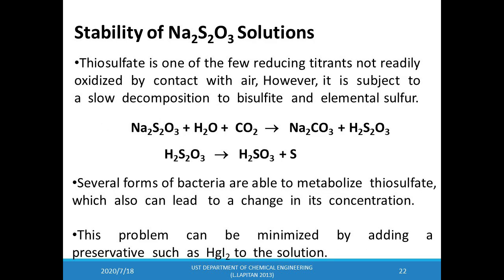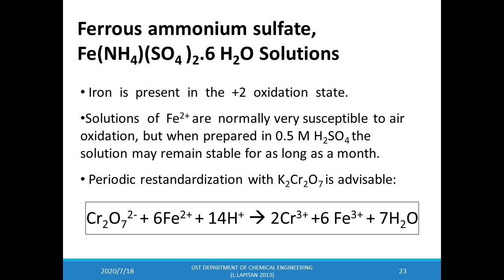Although thiosulfate is one of the few reducing titrants not readily oxidized by air, it is subject to slow decomposition to bisulfite and elemental sulfur. If used over several weeks, a solution of thiosulfate needs to be re-standardized. Several forms of bacteria can metabolize thiosulfate, changing its concentration, so this problem is minimized by adding a preservative such as mercuric iodide. Another useful reducing titrant is ferrous ammonium sulfate hexahydrate, where iron is in a +2 oxidation state. A solution of iron-2 is susceptible to air oxidation, but when prepared in 0.5 molar sulfuric acid, it remains stable for up to a month. Periodic re-standardization with potassium dichromate is also advisable.